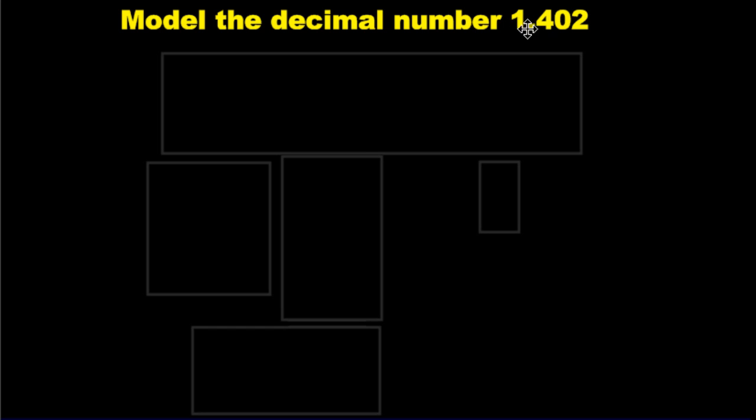You need to say one whole and four hundred two thousandths. Why four hundred two thousandths? Because we always say the value of the last digit, and since that's tenths, hundredths, thousandths, we've got to say one whole and four hundred two thousandths. Anytime you see a decimal, you have to say the word 'and'. Step one: write your number down and indicate the value of each digit.